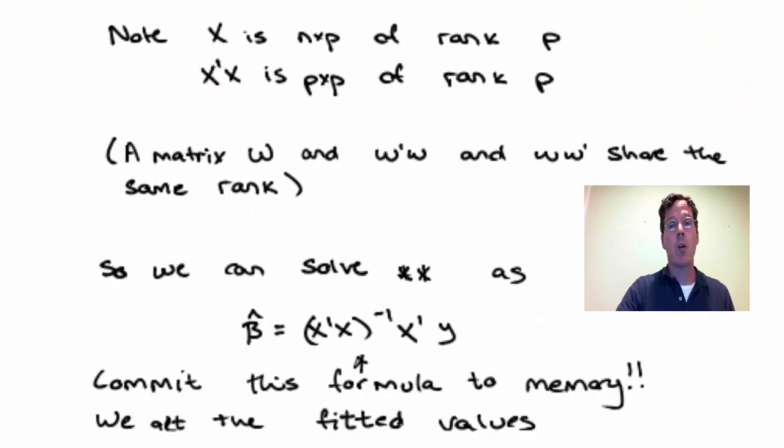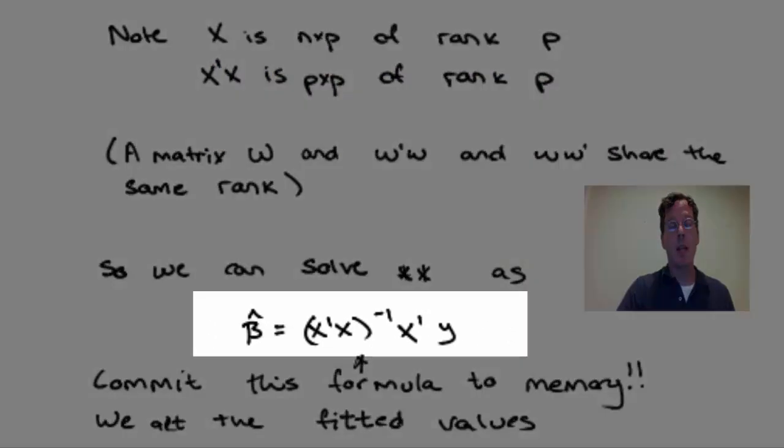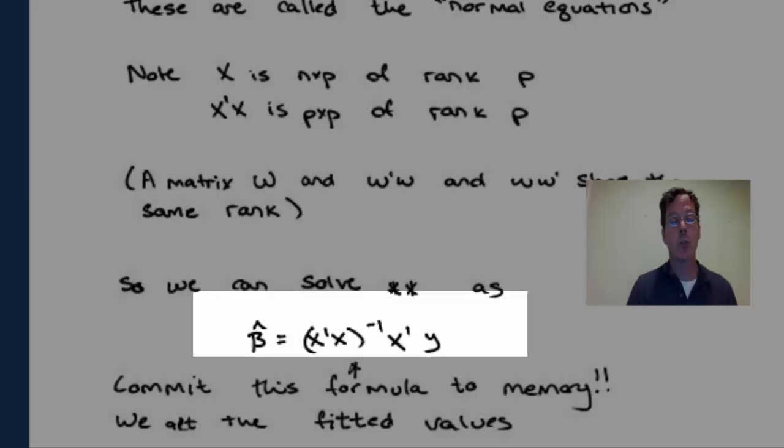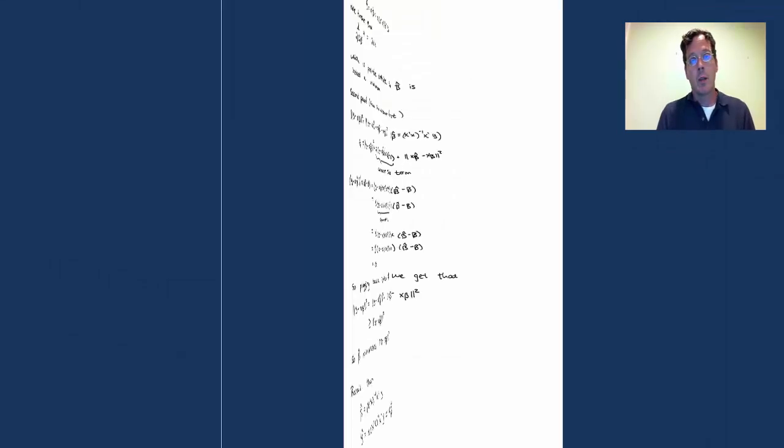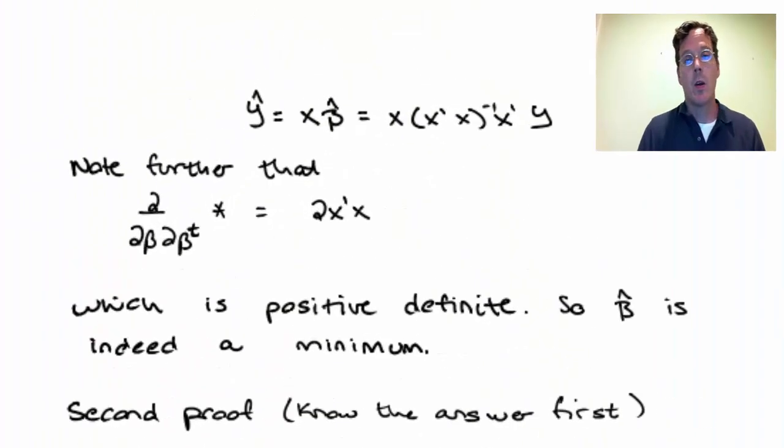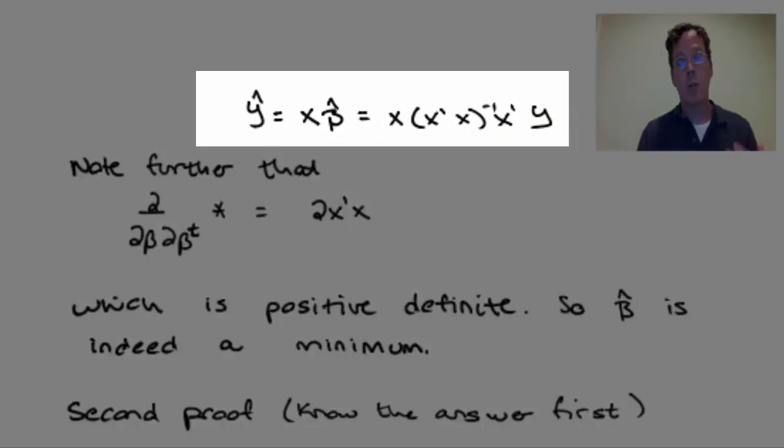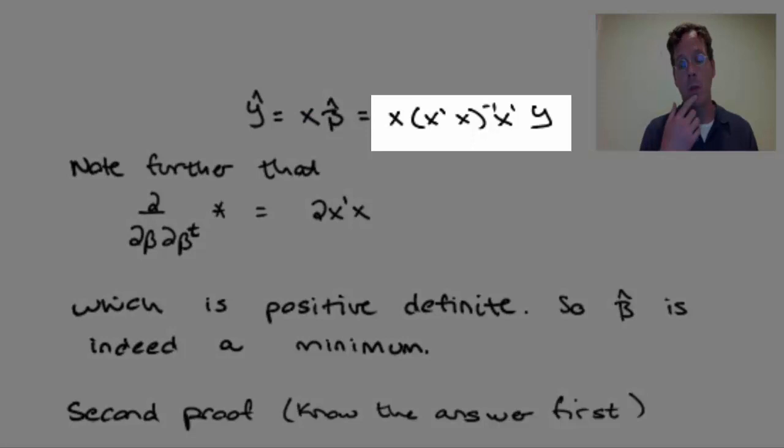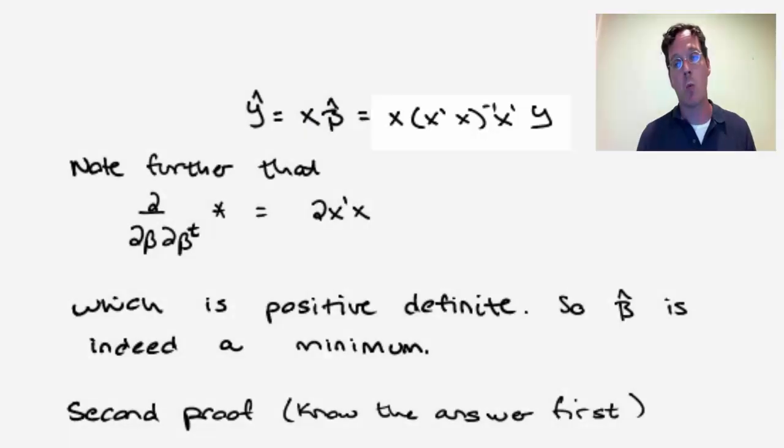So we can solve for beta hat and we get x transpose x inverse x transpose y. Commit this formula to memory. If we wanted our fitted values, we would multiply this beta hat times our matrix x. The fitted values are x times x transpose x inverse times x transpose times y. Another formula you should commit to memory.